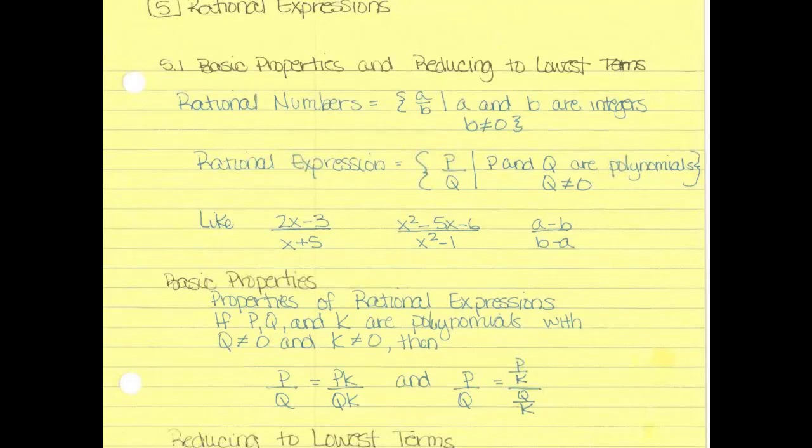We worked with rational numbers — an integer in the numerator and an integer in the denominator is a rational number. We never want the denominator to be zero. A rational expression is very similar, except the numerator and denominator are polynomials. p over q is a rational expression if p and q are polynomials and q does not equal zero.